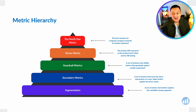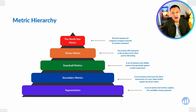When thinking about metrics in the context of A-B testing, they're often embedded within a hierarchy: North Star metric, Driver metric, Guardrail metric, Secondary metrics, and Segmentation metrics. The North Star metric is a quantitative measure of the mission statement. The Driver metric is more of a product metric that measures something on a shorter-term basis.